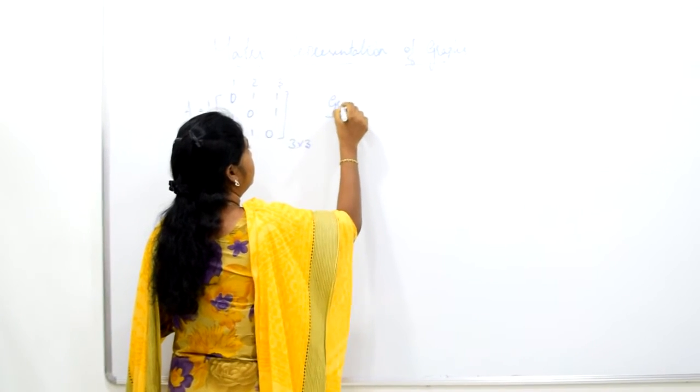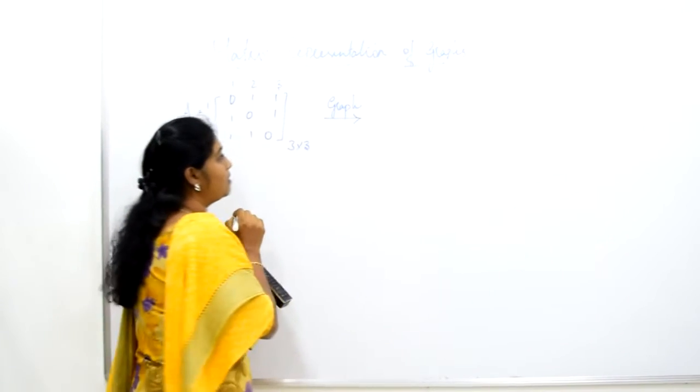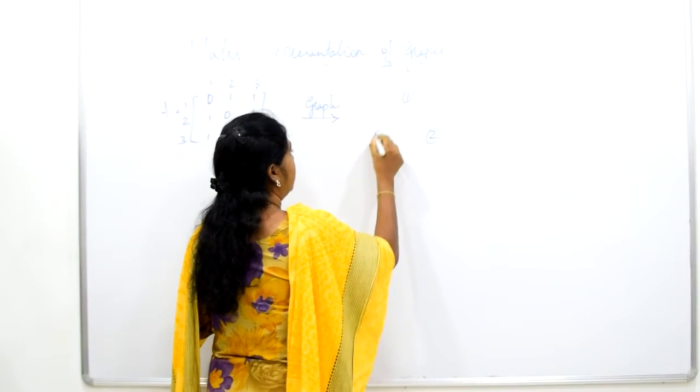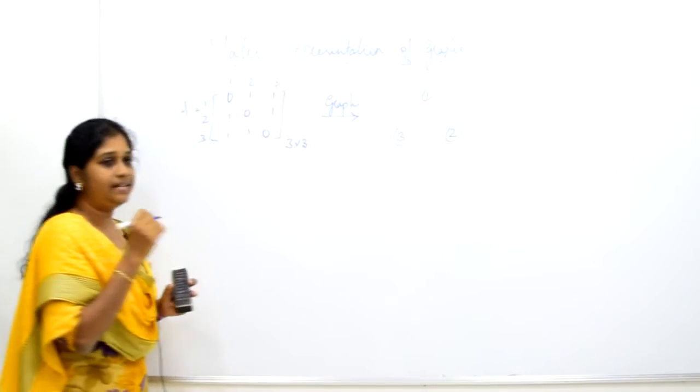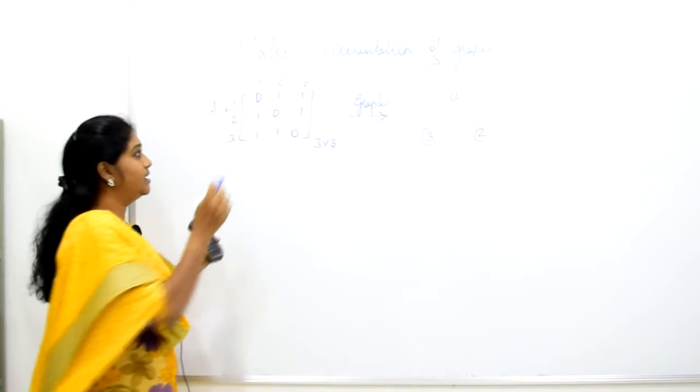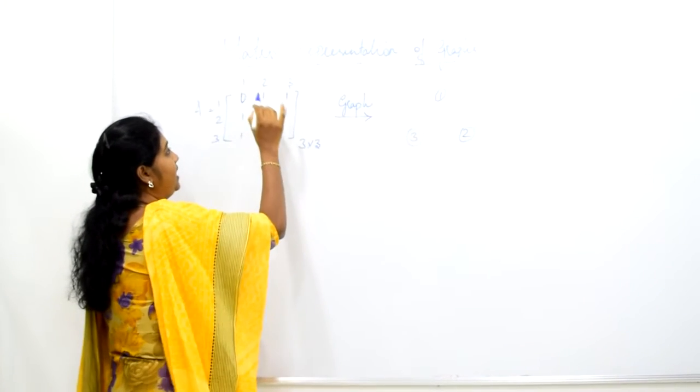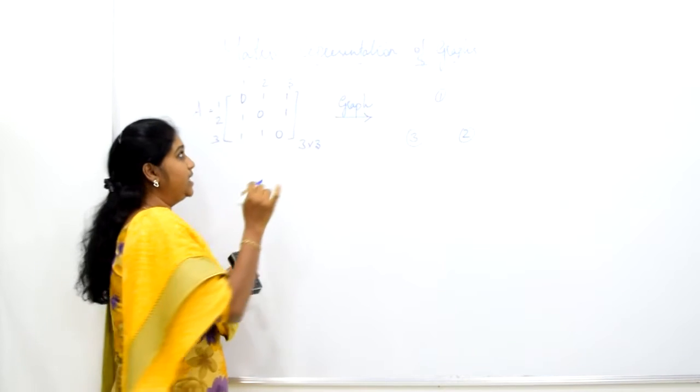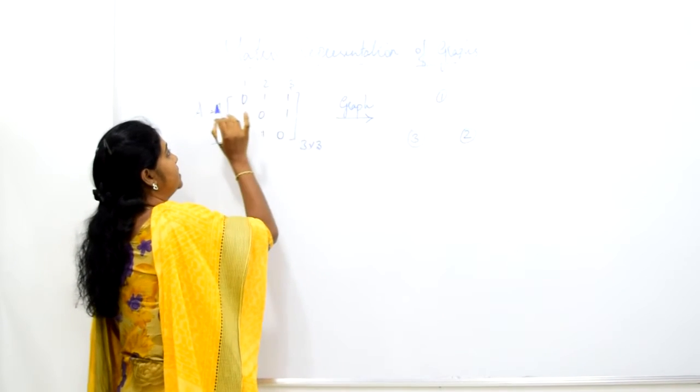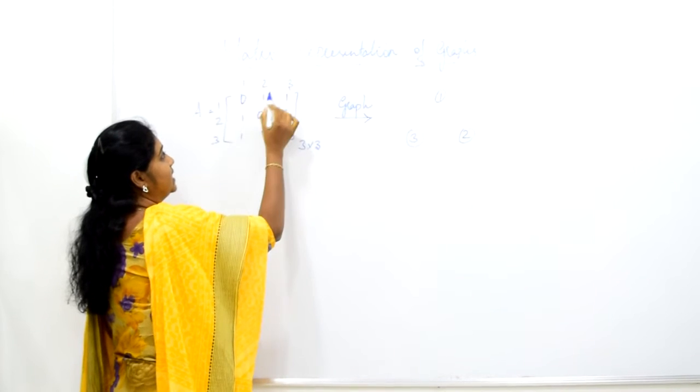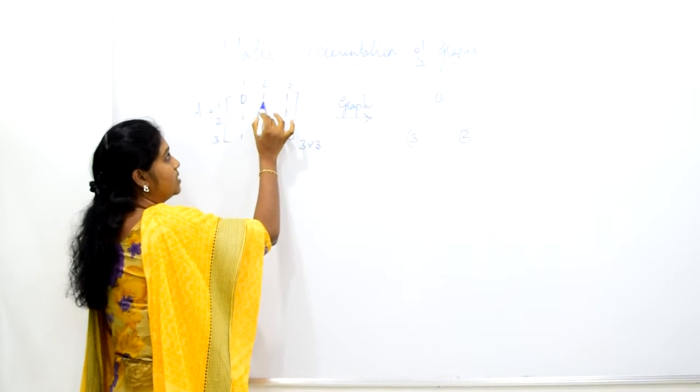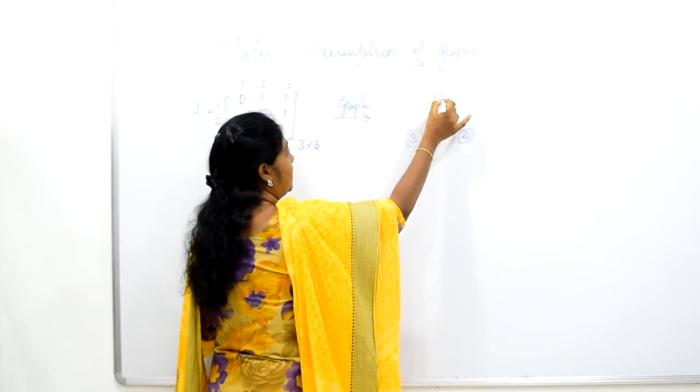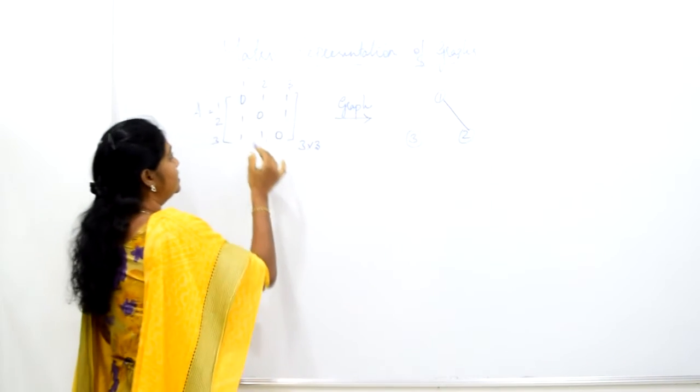Here the number of vertices, when I go for a representation of a graph, I have 3 vertices: 1, 2, and 3. Now I need the edges. How can I connect the graph with the edge? Each 1 here represents there is an edge between the 2 vertices. If 1 is a vertex here and 2, I have 1, so I can connect 1 and 2. Similarly, 1 and 3 are connected.